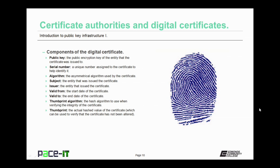There are some key components to the digital certificate. There is the public key — the public encryption key of the entity that the certificate was issued to. There is the serial number, a unique number assigned to the certificate to help identify it. The algorithm field is the asymmetrical algorithm used by the certificate. The subject field identifies the entity that was issued the certificate. The valid from and valid to fields indicate when the certificate was issued and when it expires. The thumbprint algorithm field identifies the hash algorithm to use when verifying the integrity of the certificate. The thumbprint field is the actual hashed value of the certificate, which can be used to verify that the certificate has not been altered.